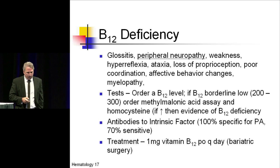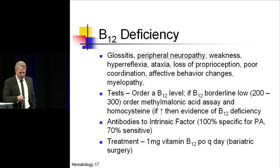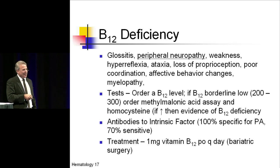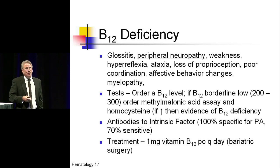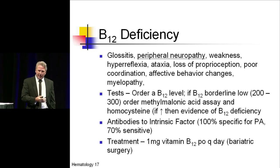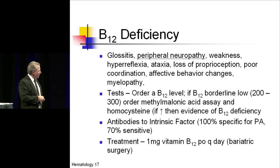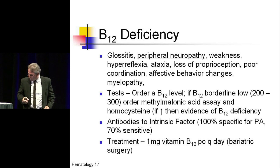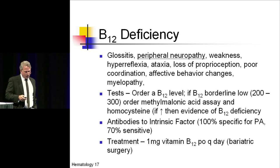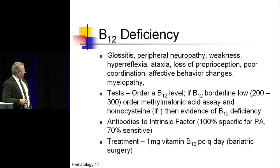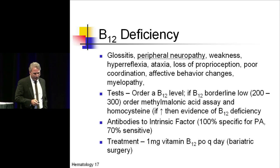We hardly ever order antibodies to intrinsic factor, which is associated with pernicious anemia. It doesn't really affect treatment because treatment is oral B12 — there are other mechanisms for absorption of B12 aside from intrinsic factor and an intact ileum. The whole idea that patients with pernicious anemia need parenteral B12 has been discredited. Oral B12 works quite well, typically given as 1,000 micrograms a day.